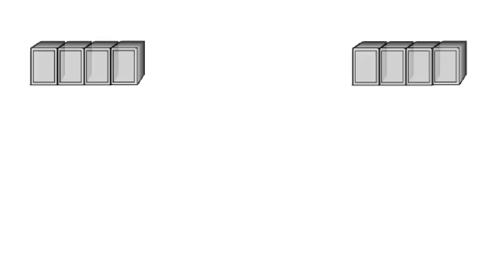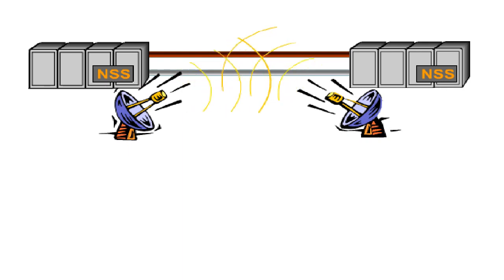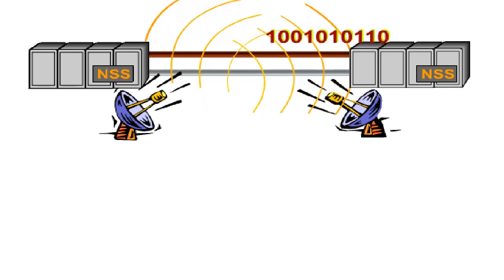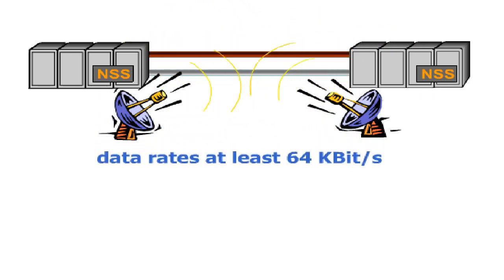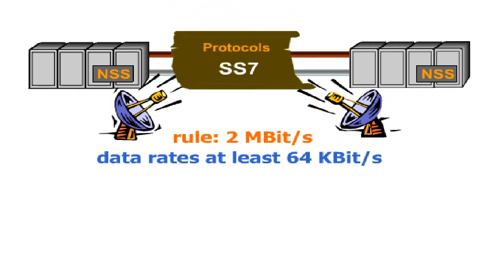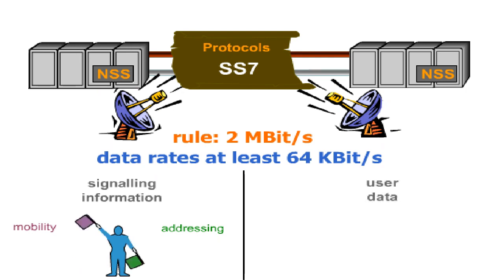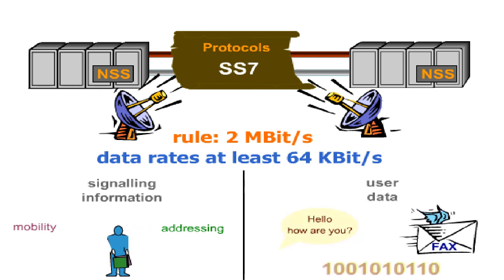Between the NSS elements, data is either exchanged over copper cable, optical fibre, or via microwave. All NSS interfaces offer data rates of at least 64 kilobits per second. Two megabit per second connections are the rule. The protocols are based on the SS7 standard. Two kinds of information are transferred over the different interfaces: signalling information, such as addressing and mobility data, and user data — that means speech, fax, and data messages.